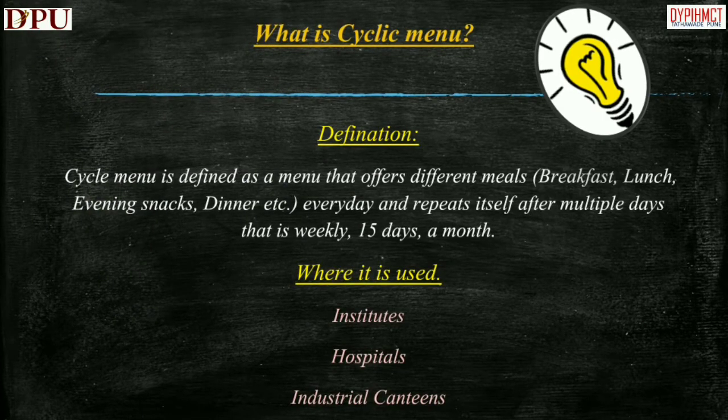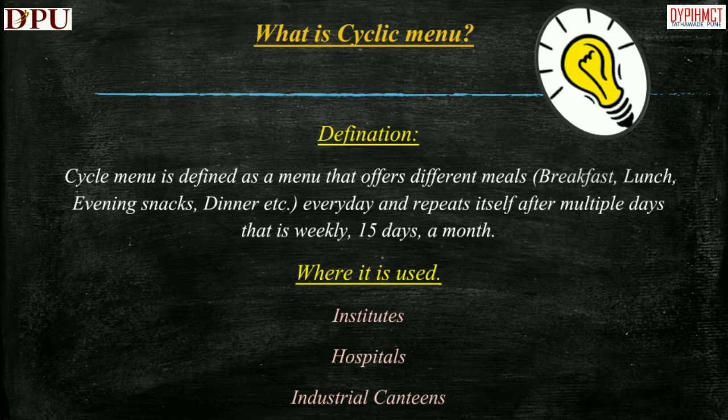Let us see what the cyclic menu is and its use in quantity cooking. A cyclic menu is defined as a menu that offers different meals — breakfast, lunch, evening snacks, dinner, etc. — every day, and repeats itself after multiple days, that is weekly, every 15 days, or monthly. The cyclic menu is useful in bulk cooking because it gives track of operation, indenting, and workflow for the period it is to be prepared. It reduces the daily stress of thinking and planning what is to be prepared for each meal each day. The cyclic menu is used in institutes, hospitals, industrial canteens, and many other institutions where there are large numbers of people to be fed daily.